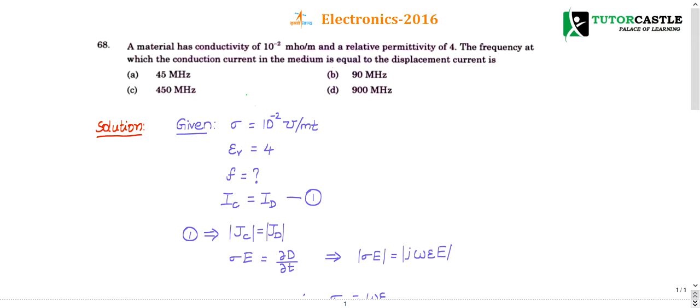Let us write the given data and what he is asking. He has given that conductivity 10 power minus 2 Moh per meter and relative permittivity is given as 4 and he is asking what is the frequency. And he is also given conduction current is equal to displacement current. This is also given for us.